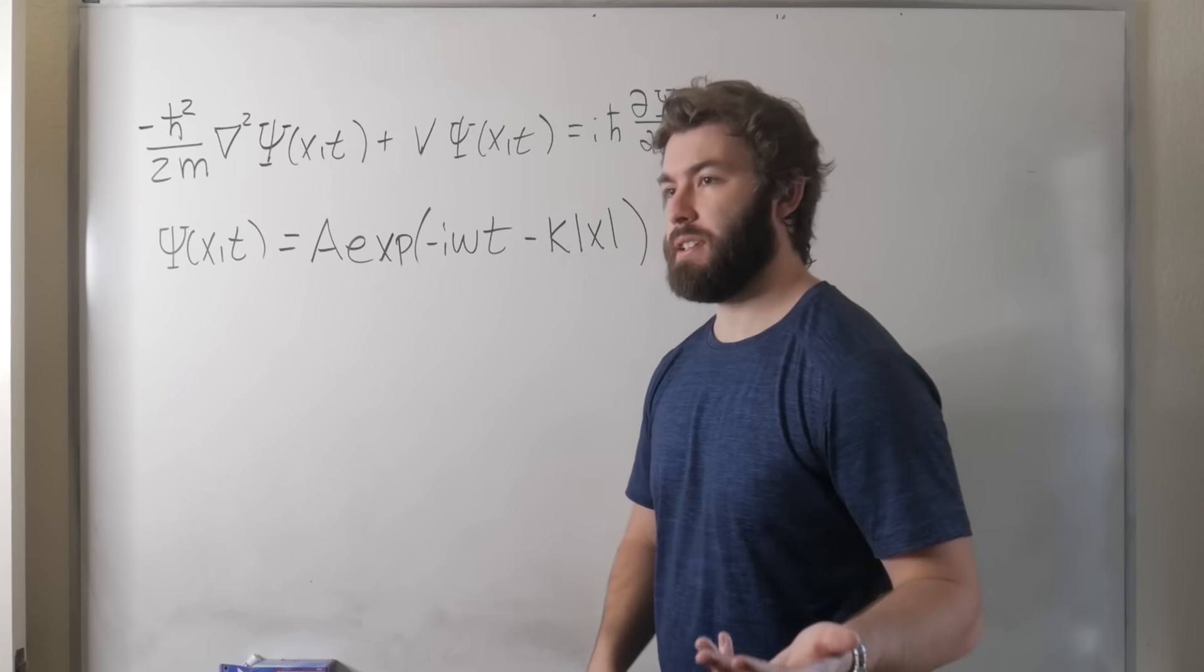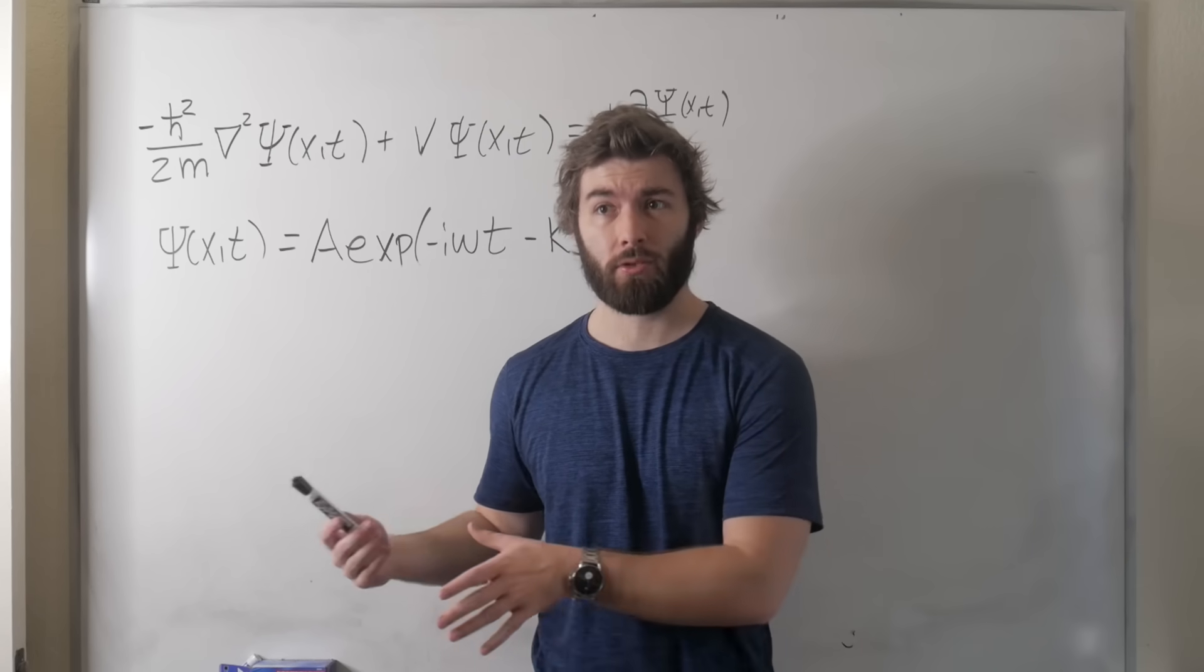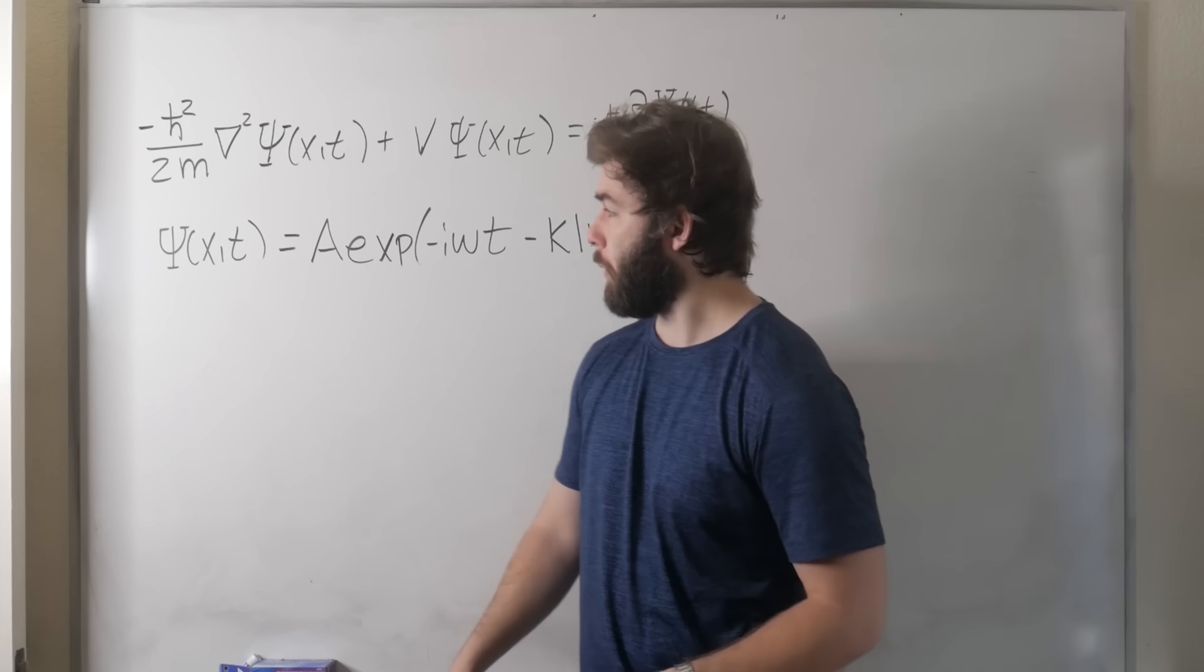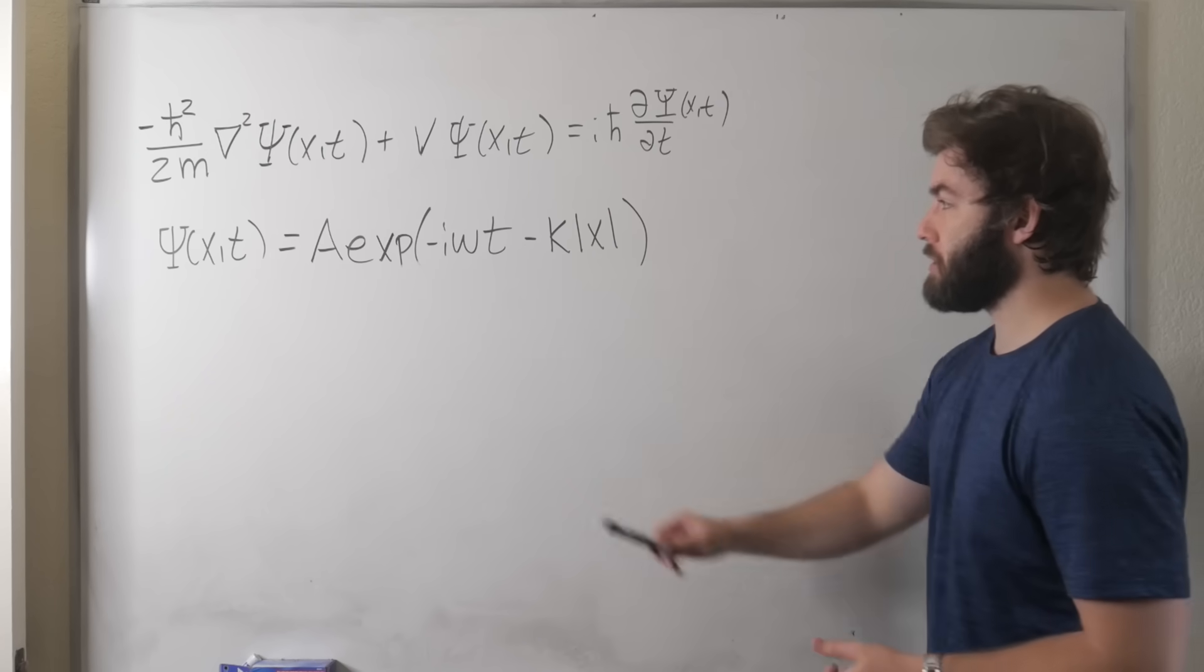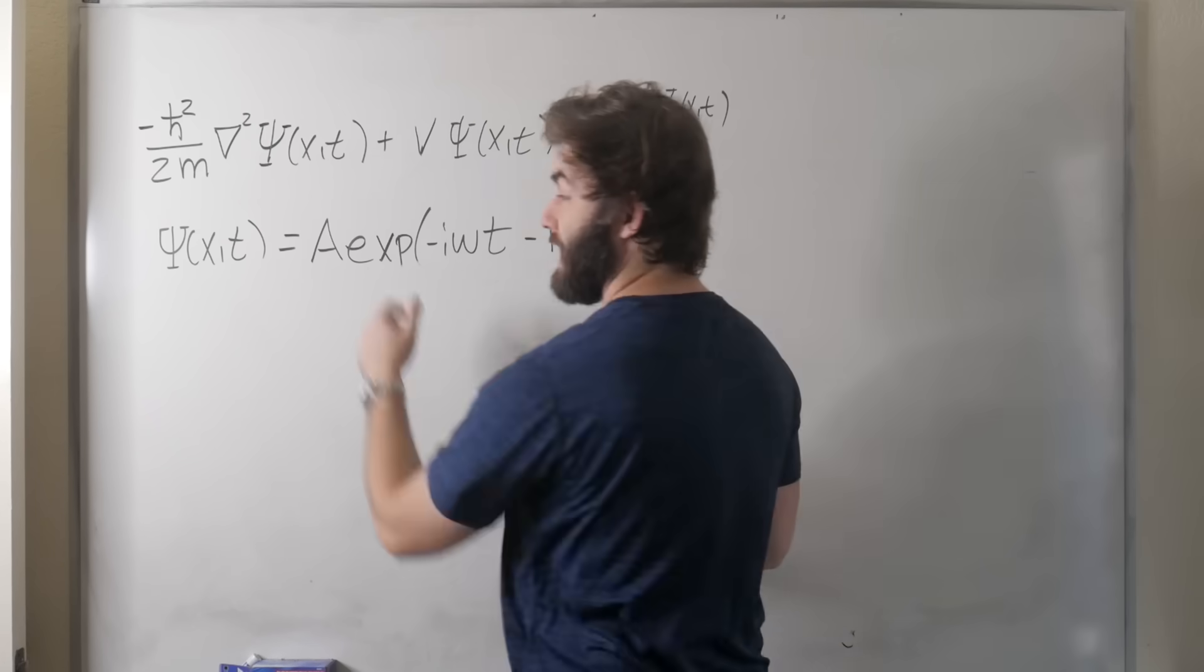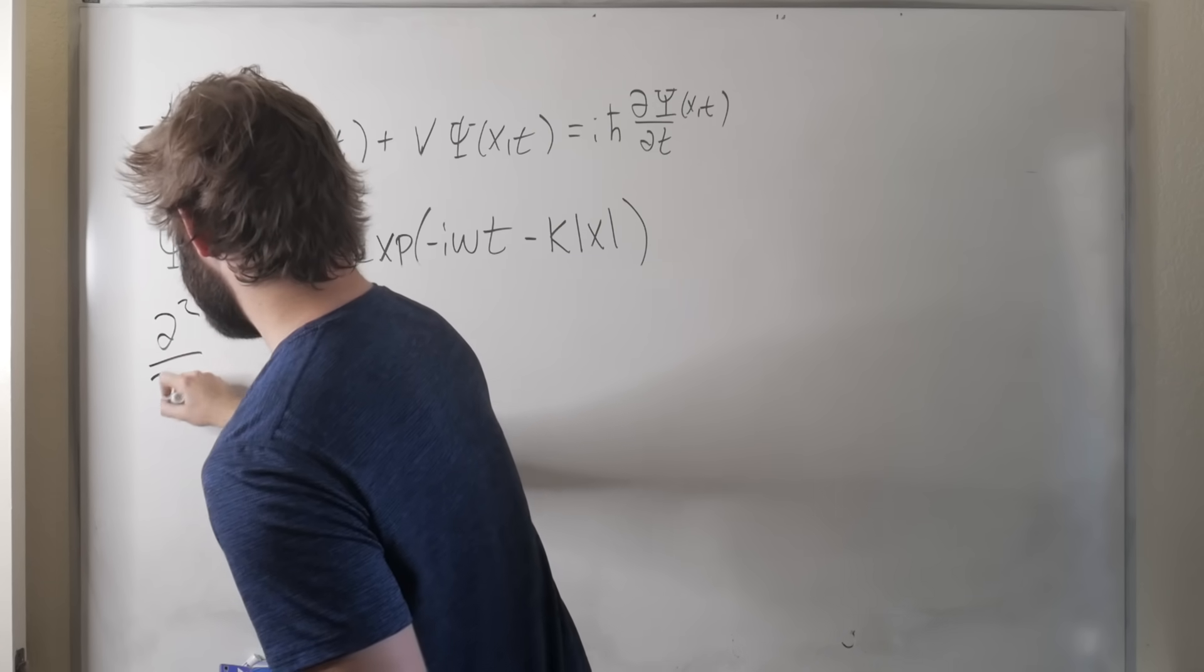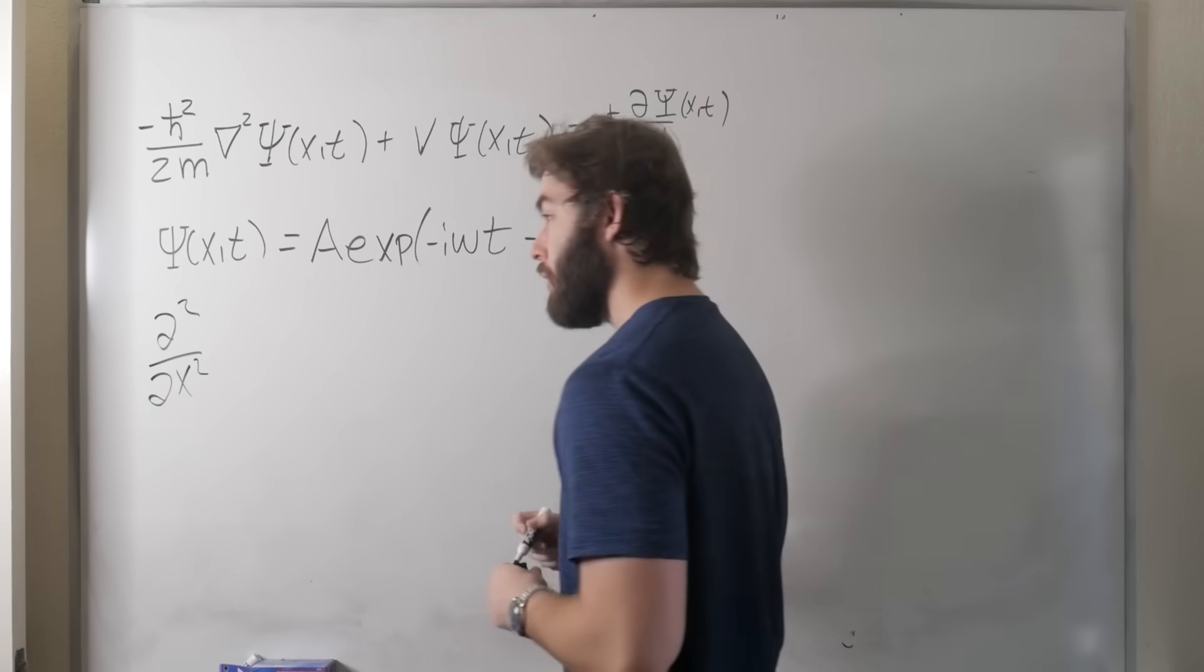Now that we know how to deal with stationary states and the Schrodinger equation, the next question is how do we actually extract the energies from it? Well, if this is our example wave function in terms of time and the magnitude of the position, the first step is to take its second derivative. We just gotta do our little d squared dx squared and here we go.